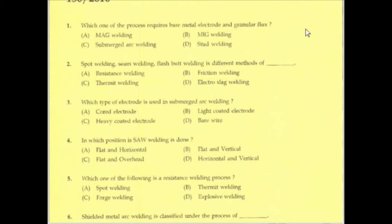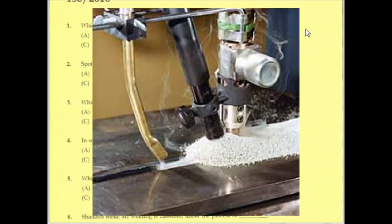Which one of the processes requires bare metal electrode and granular flux? In submerged arc welding, bare metal electrodes and granular flux are used.